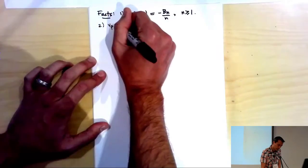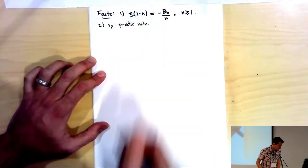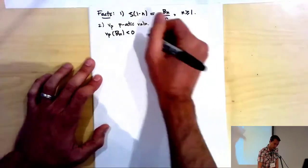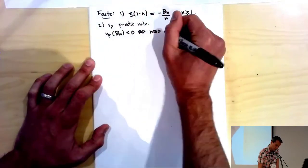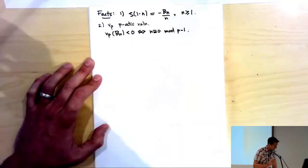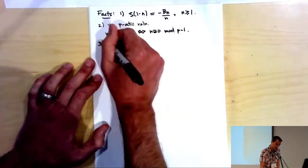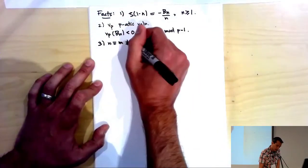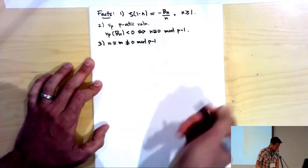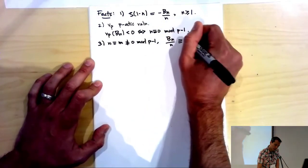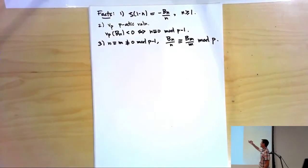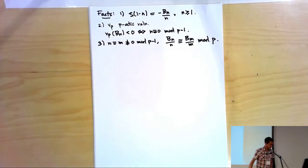If V_P is the P-adic valuation, then V_P(B_n) < 0 if and only if n ≡ 0 mod (P−1), in which case the value is −1. Third, they satisfy congruences helpful in constructing the P-adic L-function. A simple example: if n ≡ m mod (P−1) and neither is zero mod (P−1), then B_n/n ≡ B_m/m mod P. In particular, to check whether P divides a Bernoulli number, I only need to look at indices less than P−1.